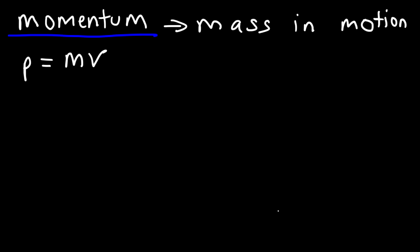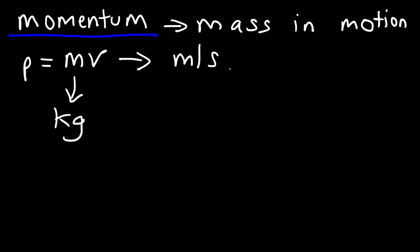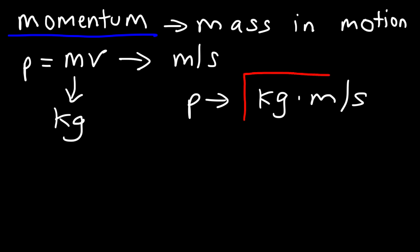Now let's talk about the units of momentum. In physics, mass is typically in kilograms and velocity is usually in meters per second. So momentum will have the units kilograms times meters per second. This is the most common unit you'll see for momentum.